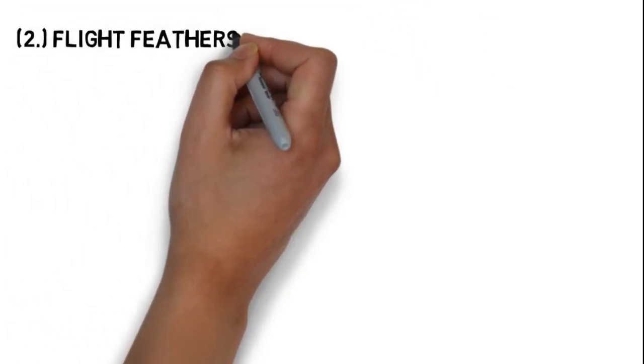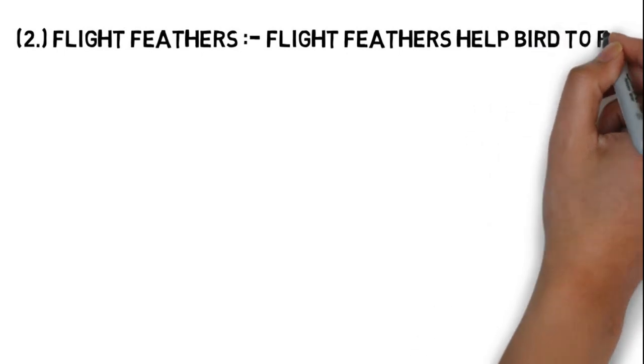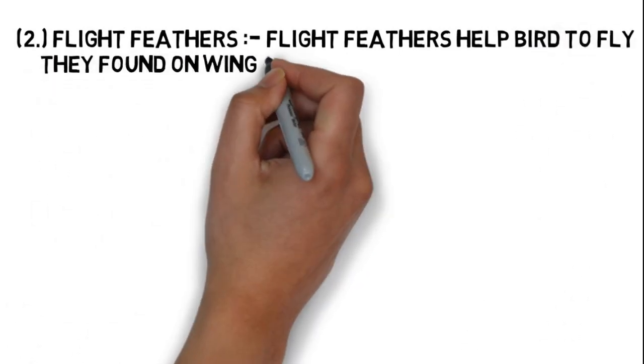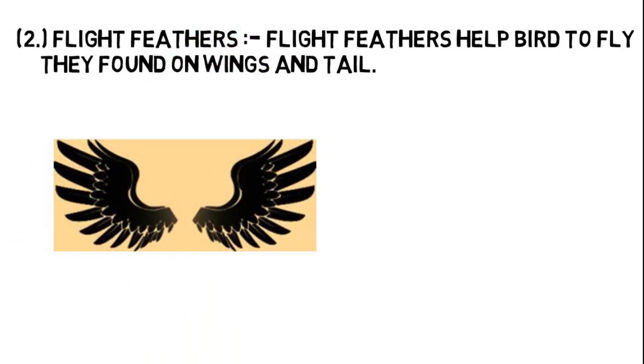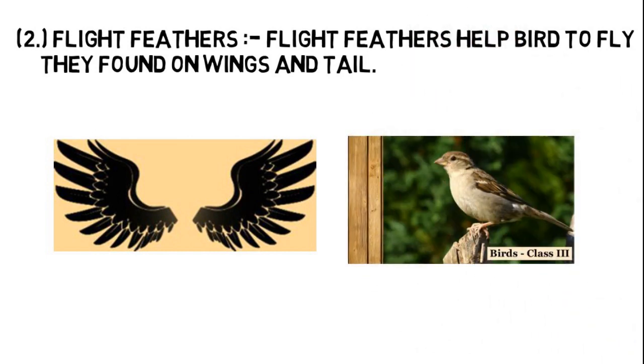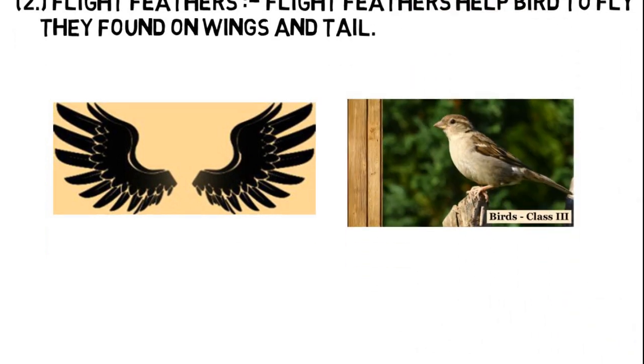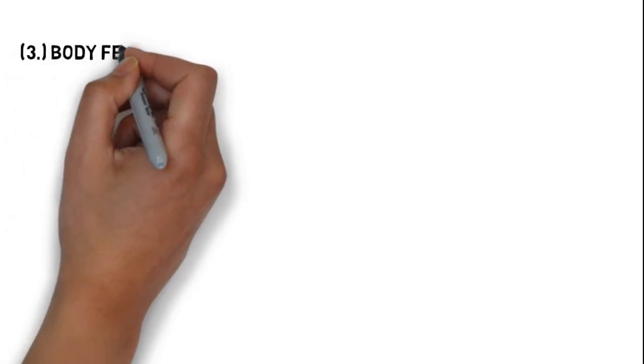Number two, flight feathers. Flight feathers help birds to fly. They are found on wings and tail.